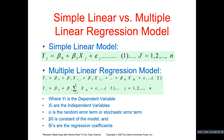In this slide you can see the simple linear regression model and the multiple linear regression model. Equation number one shows the simple linear model. We call this simple because there are only two variables involved: Y_j is the dependent variable and X_j is the independent variable. Beta-naught and beta-1 are coefficients — beta-naught is the intercept term and beta-1 is the regression coefficient — and epsilon_j is the random error term.